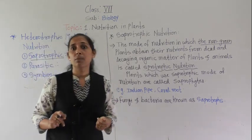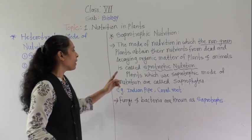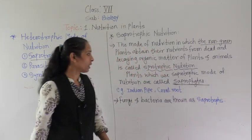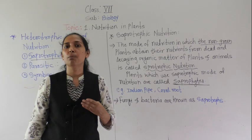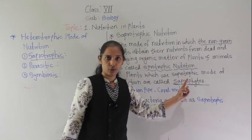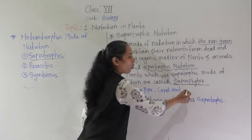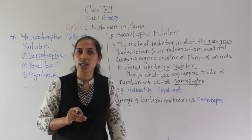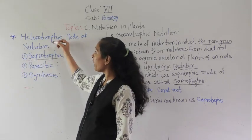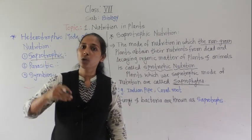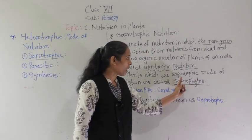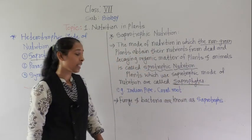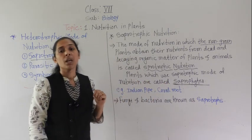The plants which use the saprotrophic mode of nutrition are called saprophytes — a very important word to keep in mind. Just as organisms following autotrophic nutrition are called autotrophs, and heterotrophic nutrition are called heterotrophs, organisms following saprotrophic nutrition are called saprophytes. Examples are Indian pipe and coral root.